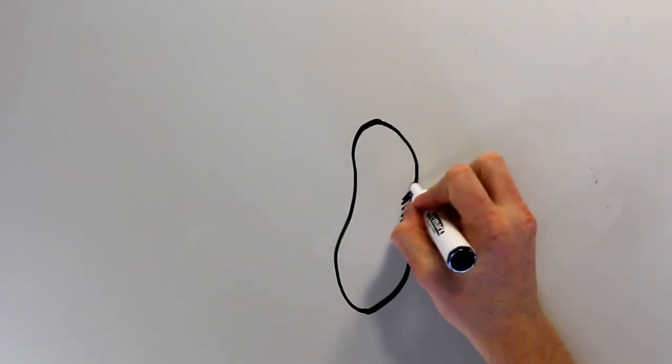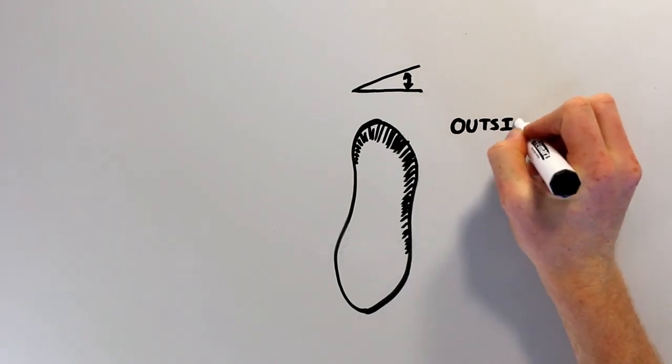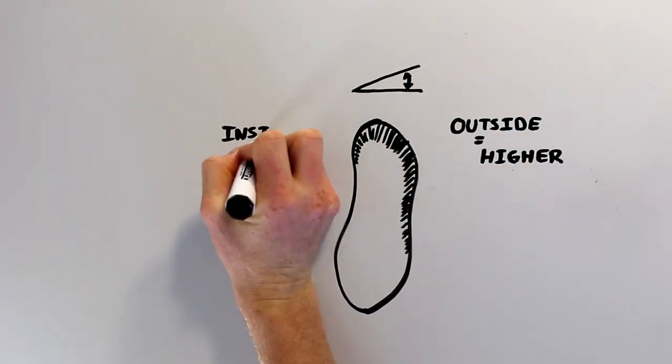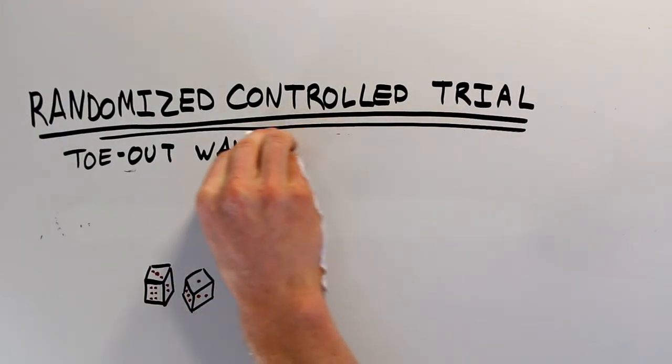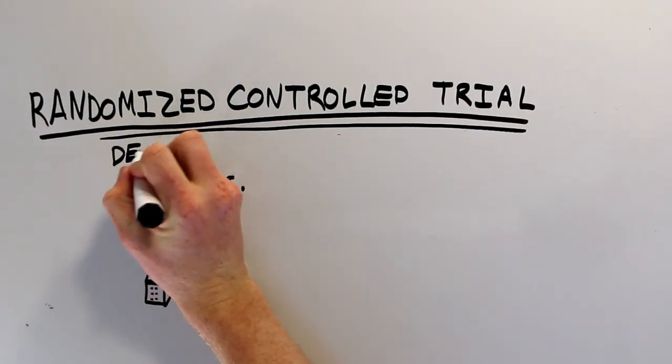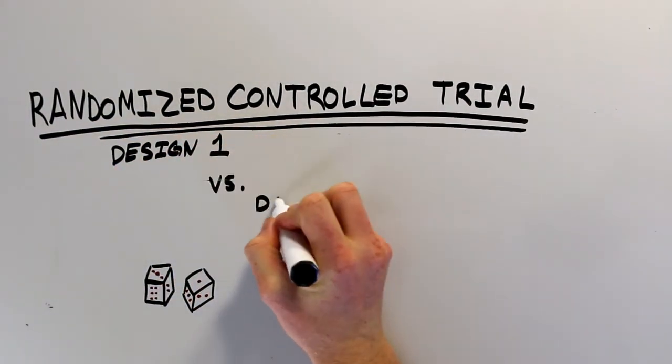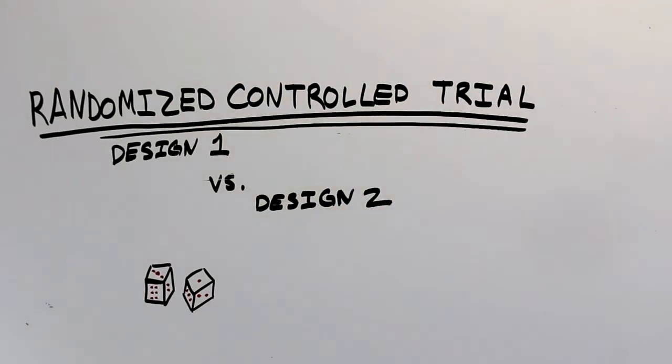Another conservative treatment that tries to reduce the impact to the inside part of the knee is the use of shoe insoles with a lateral wedge. This type of insole is higher on the outside and lower on the inside. A randomized controlled trial is currently looking to ensure that lateral wedge insoles are as safe as possible for people with knee osteoarthritis by comparing a couple of different designs.